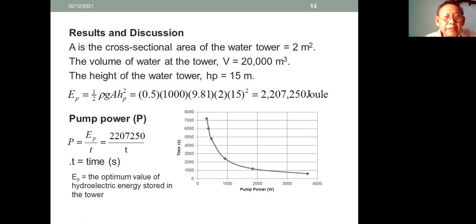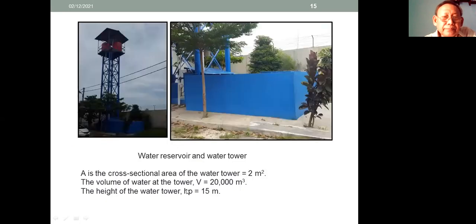The area of the optimum in the curve is between one thousand and two thousand watts.